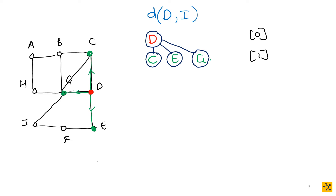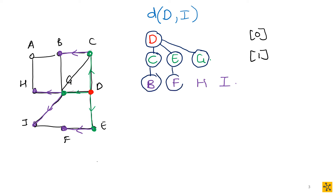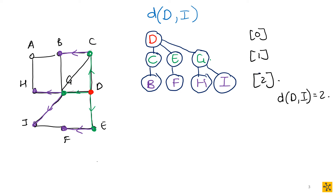Next, we take all vertices on level one and look at their adjacent unactivated vertices, again in alphabetical order. C has adjacent vertex B — not yet activated. E activates F. G activates H and I. All of these are level two. So from D to I, you have a shortest path length of two. You already have the answer and could stop at this point.